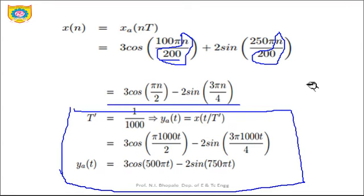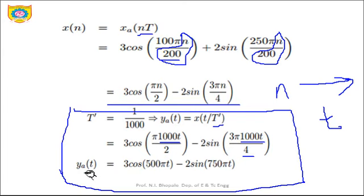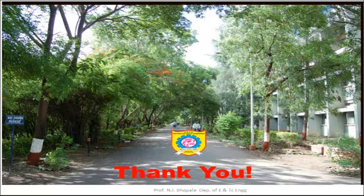For the DAC stage, convert the discrete signal back to analog by substituting N = T/TS', where TS' = 1 millisecond, so N = T/0.001 = 1000T. Substituting into X(N): the first component gives 3cos(500πT) and the second gives 2sin(750πT). Therefore, the output is y_a(T) = 3cos(500πT) − 2sin(750πT). Thank you — next time we will cover other parts of DSP.